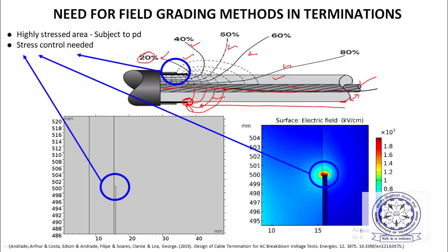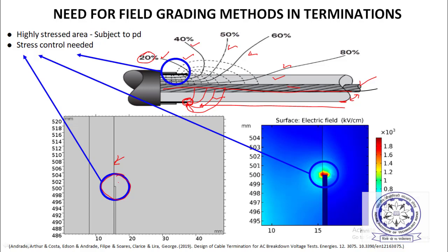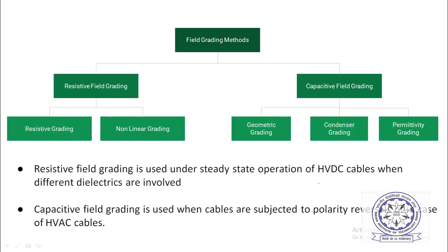Here you can see a cross-sectional view with the semi-con layer and the conductor. The simulated electric field distribution shows very high field — red color indicating above 1.8 × 10³ kV/mm — at the tip of the semi-conducting layer. This is how the electric field gets enhanced whenever we open the semi-conducting layer, and this creates problems and often breakdown also occurs at this junction.